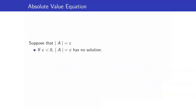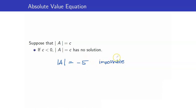Let us start discussing absolute value equations. Suppose that A is just an expression and the absolute value of A is equal to c. If c is negative, then the equation has no solution. For example, if c is negative 5, can the absolute value of a number equal negative 5? No, this is impossible. So this has no solution — the solution set is the empty set.